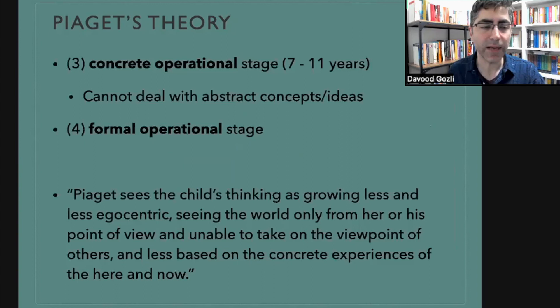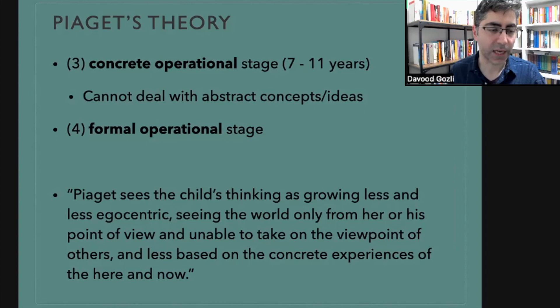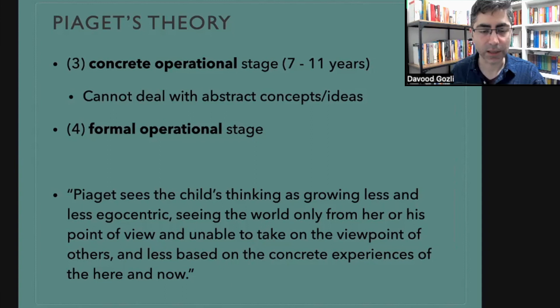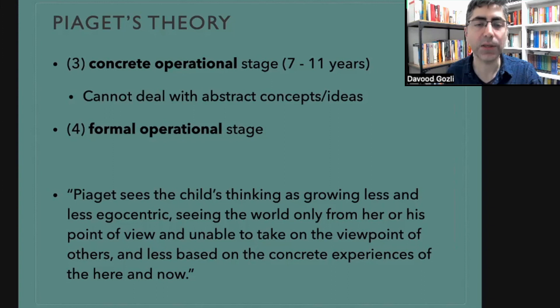Then we have the third and fourth stages — the concrete operational stage and the formal operational stage. In these stages, the child is equipped to use concepts. The difference is that in the fourth stage, concepts can be quite abstract. As Piaget describes: the child's thinking grows less egocentric and less based on concrete experiences of the here and now. As we go from stage one to four, the child becomes less attached to their particular point of view and can handle experience with more and more abstract concepts.